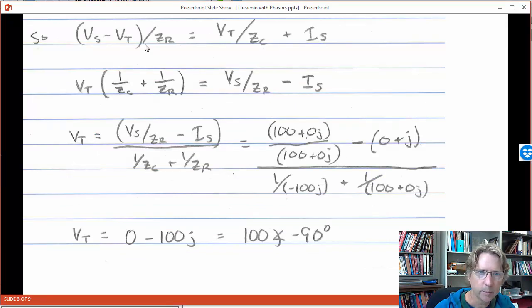So then combining them together, this is IR equals IC plus IS. Combining the equations together, and then simplifying solving for VT. So we've got the VT over ZR term there, the VT over ZC term here, moving everything else to the right hand side. And then eventually we can solve here for VT, in terms of all of the parameters of the circuit.